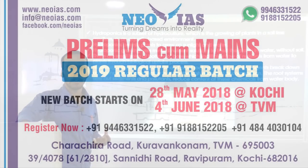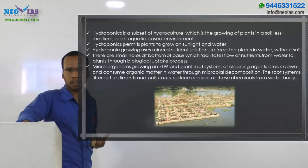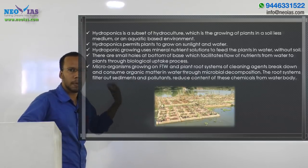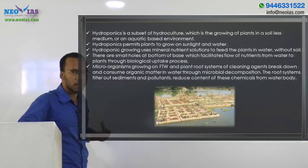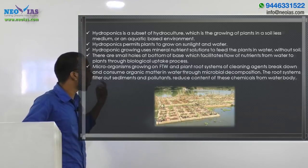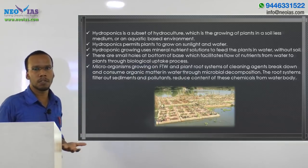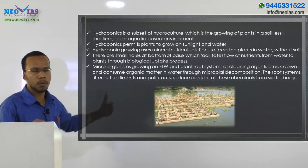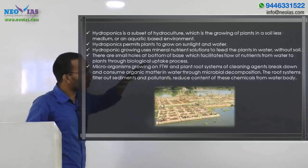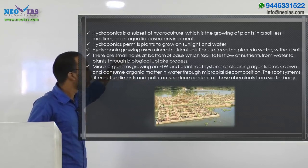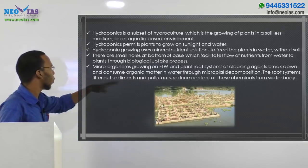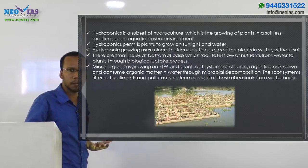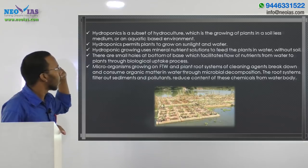On the roots of some plants, there are many microorganisms living. The microorganisms growing on the FTW and on the roots of the plants are breaking down the organic matter present in the water through their microbial decomposition process. This natural decomposition also degrades organic matter in the water body, purifying it. Additionally, the root systems of the plants filter sediments and pollutants, thereby reducing the content of these chemicals from the water body.